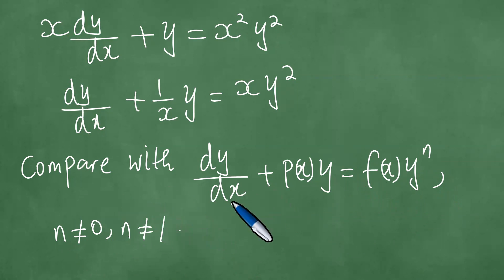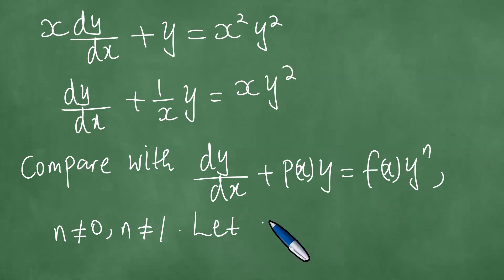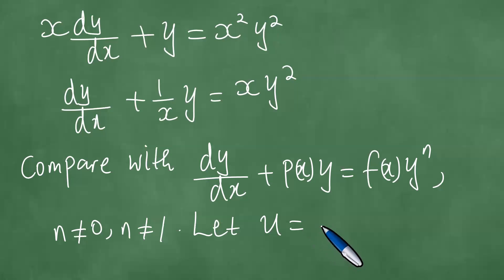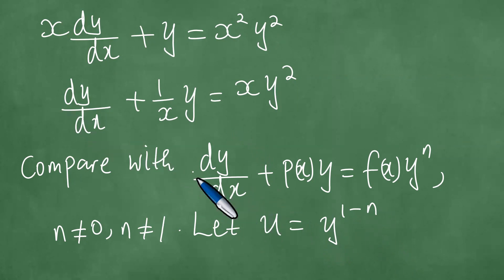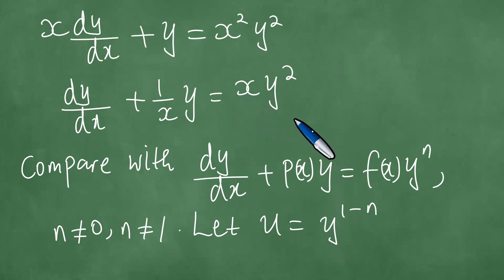We compare with this form and let u be equal to y to the power 1 minus n. After transforming and comparing, we can see that P(x) becomes 1 over x, f(x) is x, and there is y to the power n, which is exactly y squared.